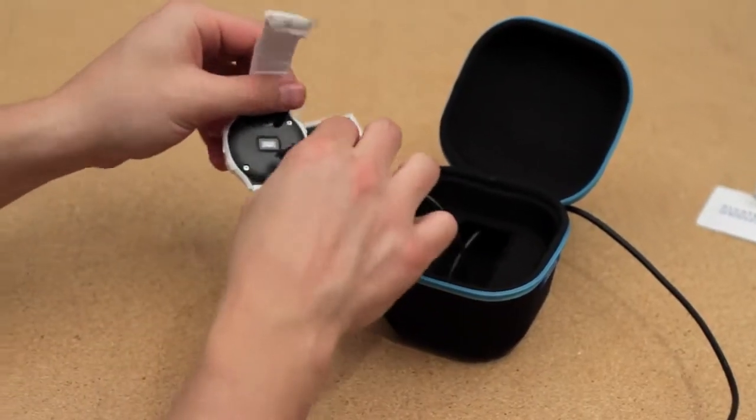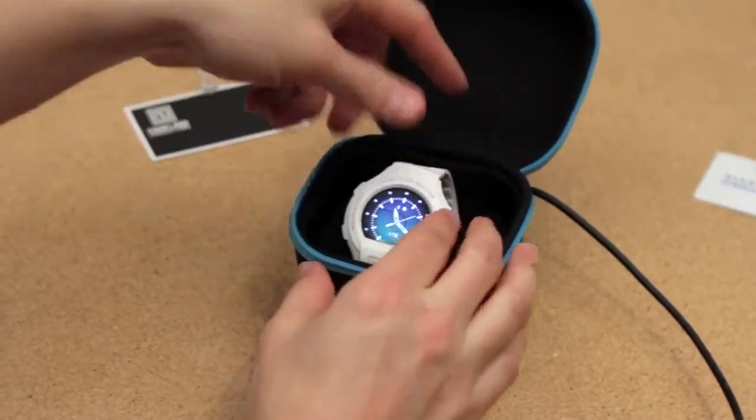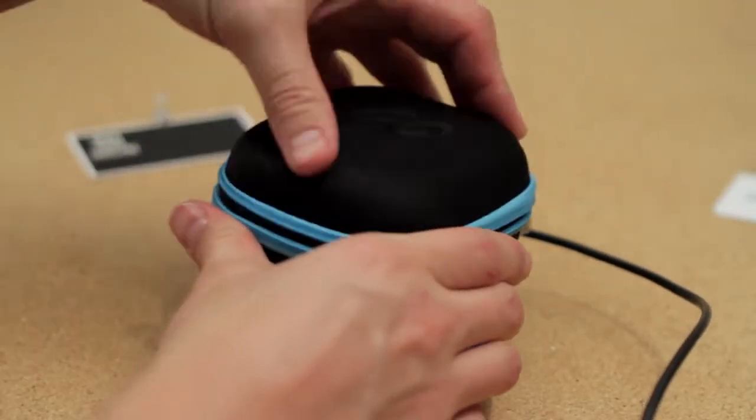Simply open the lid of the GoWatch box, lift up the micro USB plug, and insert it into the backside of the watch near the heart rate sensor. Then just set the watch back down in the case and close the lid.